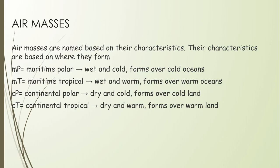After layers of the atmosphere, we talked about air masses. Air masses are big blobs of air that we name based on their characteristics, and they get those characteristics based on where they are formed. There are four types, just like there are four layers of the atmosphere. MP means maritime polar — a maritime polar air mass is wet and cold because it forms over cold oceans. MT is maritime tropical, which is wet and warm, forming over warm oceans. The 'M' deals with moisture content — maritime means ocean.